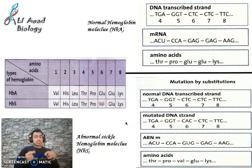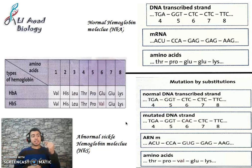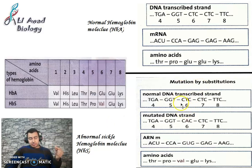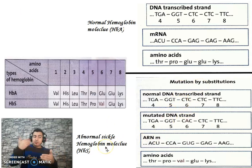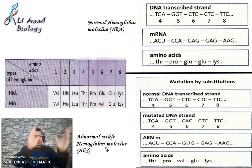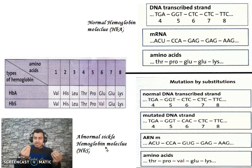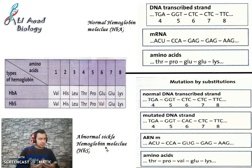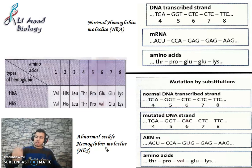There is an important thing to know before we continue to deletion mutations. The mutation produced a new protein — sickle hemoglobin. Is sickle hemoglobin normal? No, it's abnormal. The mutation leads to the production of new proteins and new characteristics — a new phenotype.